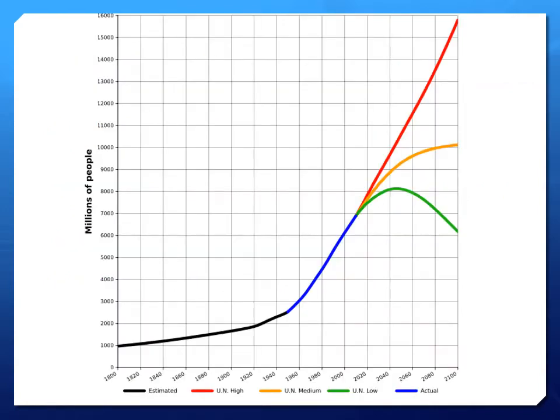In this class we're focusing on a simple example — the world population and how it may evolve over time. This graph, obtained from the United Nations Population Fund, shows the evolution of population since the 1800s when world population was around one billion, to today at a little over seven billion and growing. There are high, medium, and low scenarios of growth that we'll be working with.